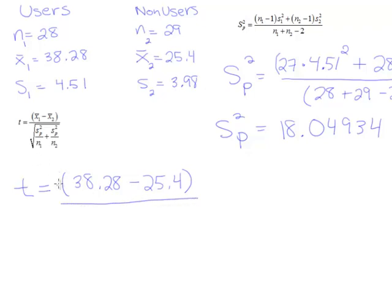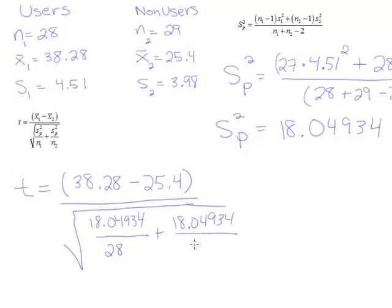Then fraction bar, the square root of, we're going to have sp squared. Now we already worked that quantity out, so we just put it in as is: 18.04934 divided by the sample size for that group, which is 28, plus 18.04934 divided by the sample size 29.